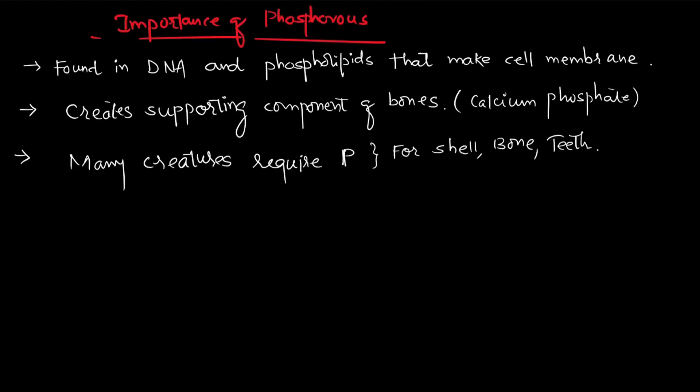Phosphorus is important because it is found in DNA and in the phospholipids that make up the cell membrane, which is one of the most basic constituents of a living body. It also creates supporting components of bones, namely calcium phosphate. Many creatures require phosphorus for their shells, bones, and teeth.